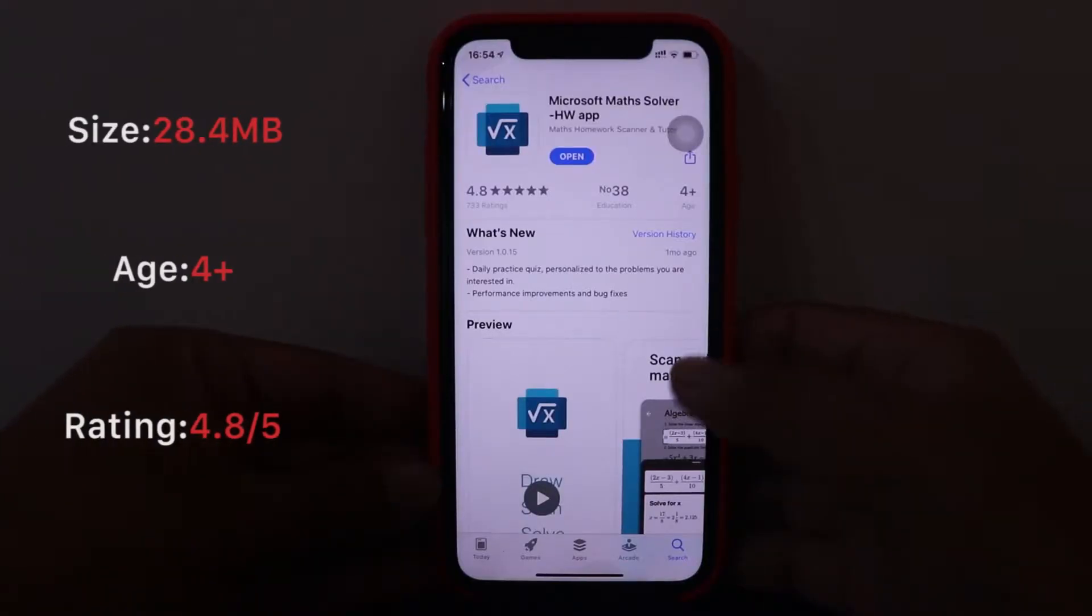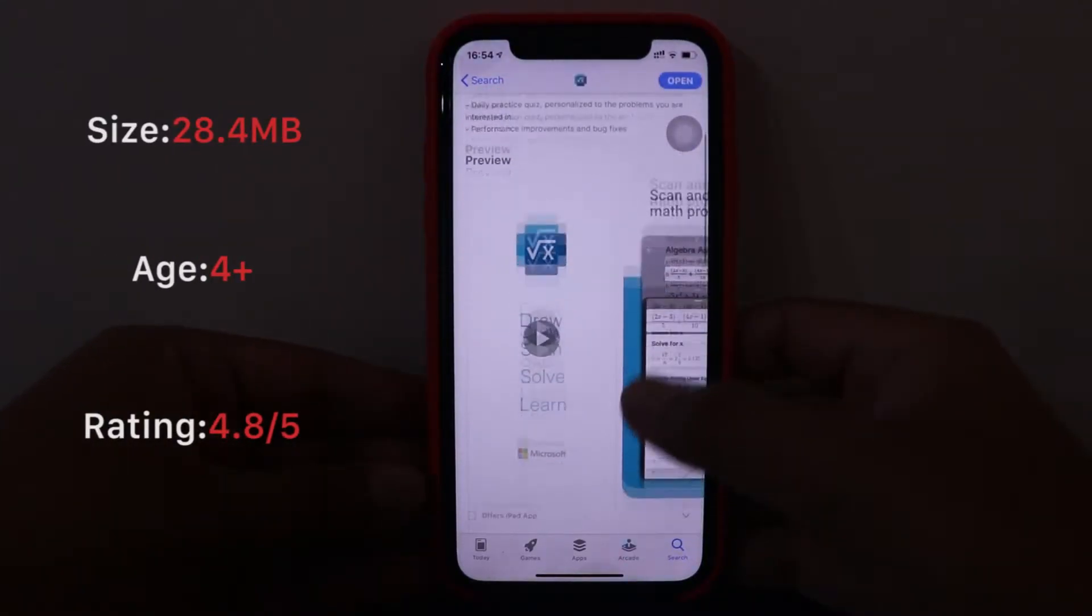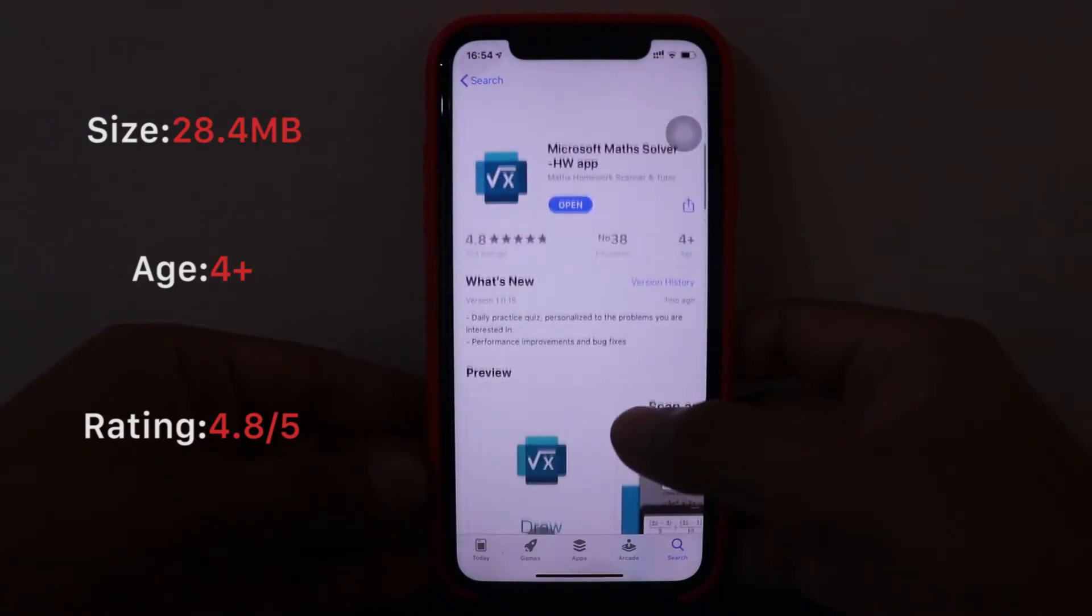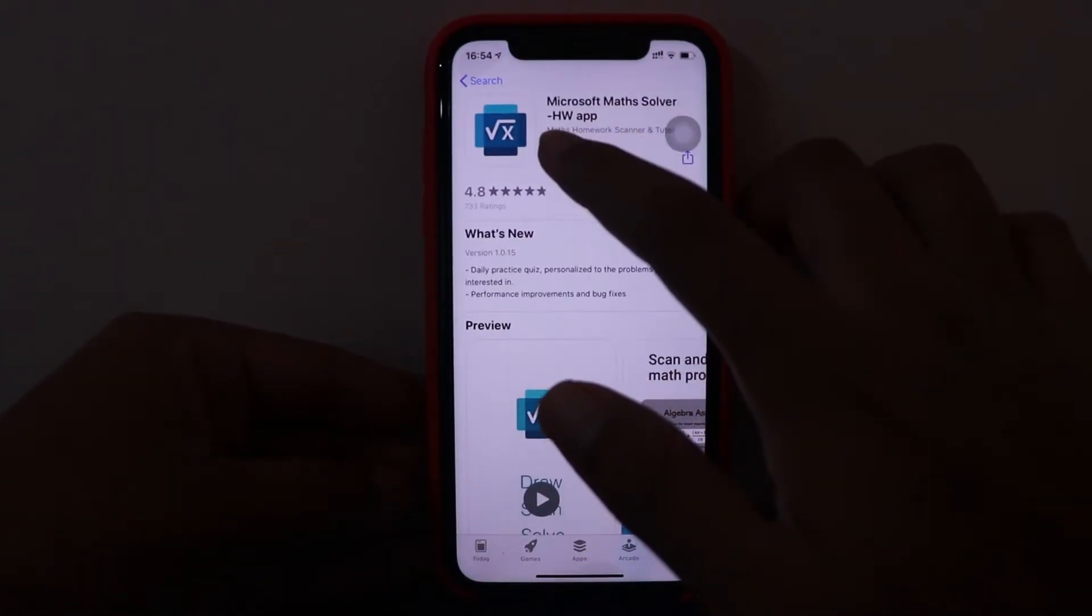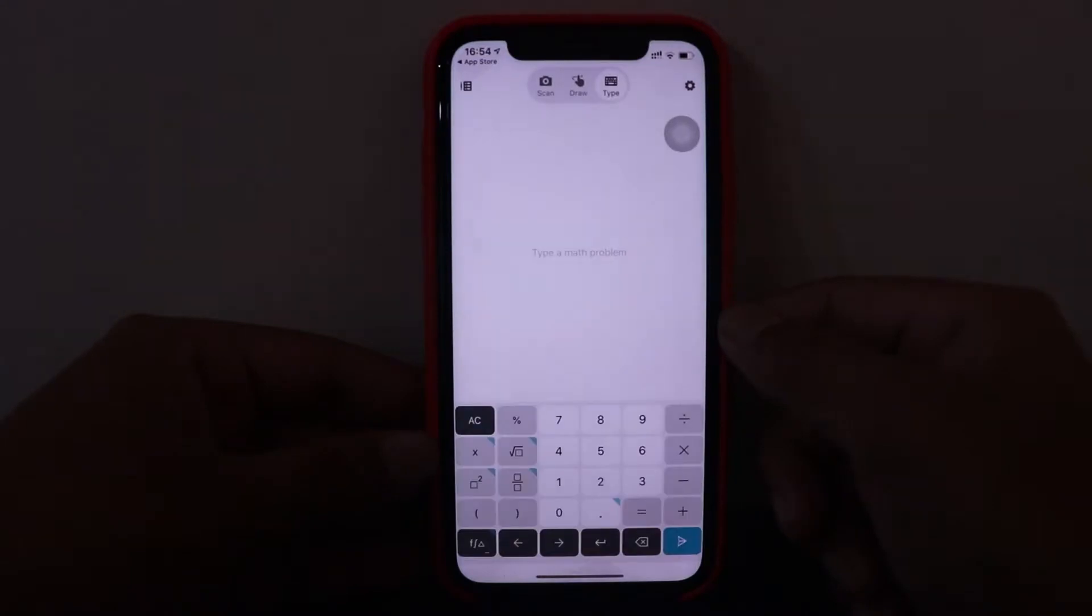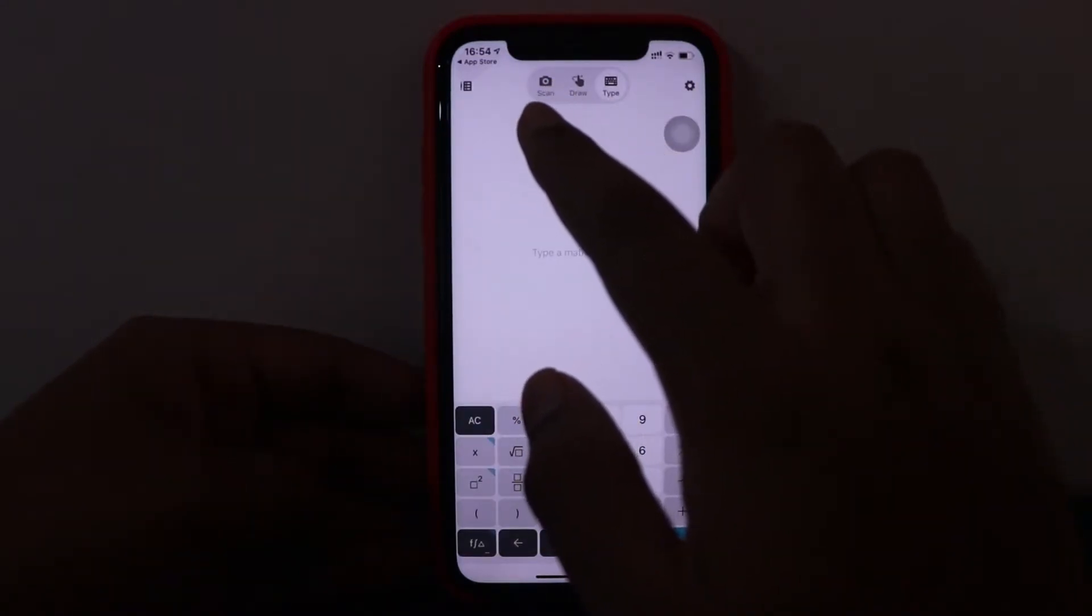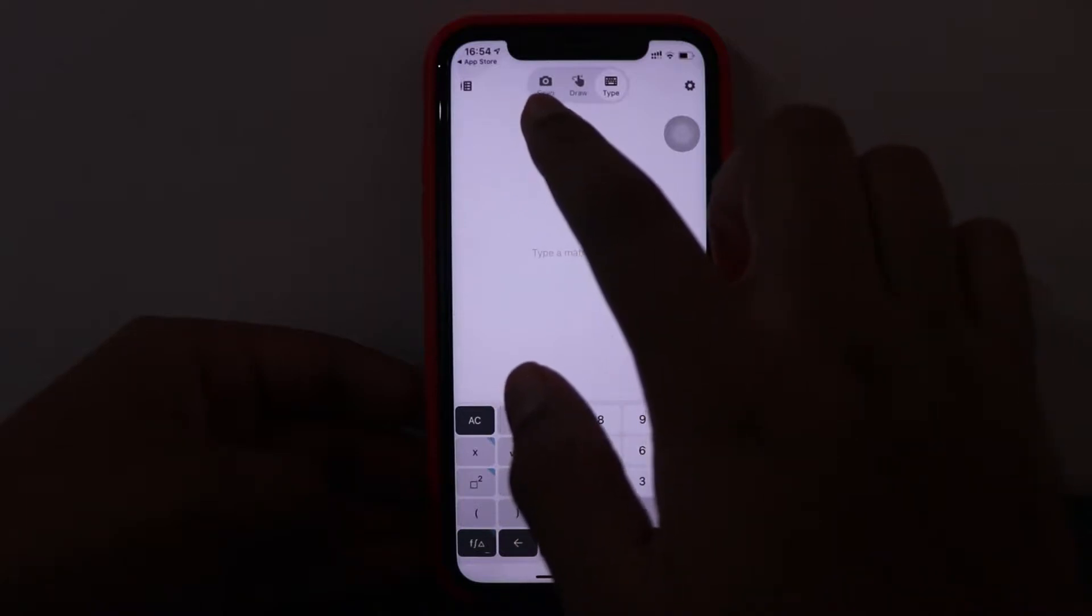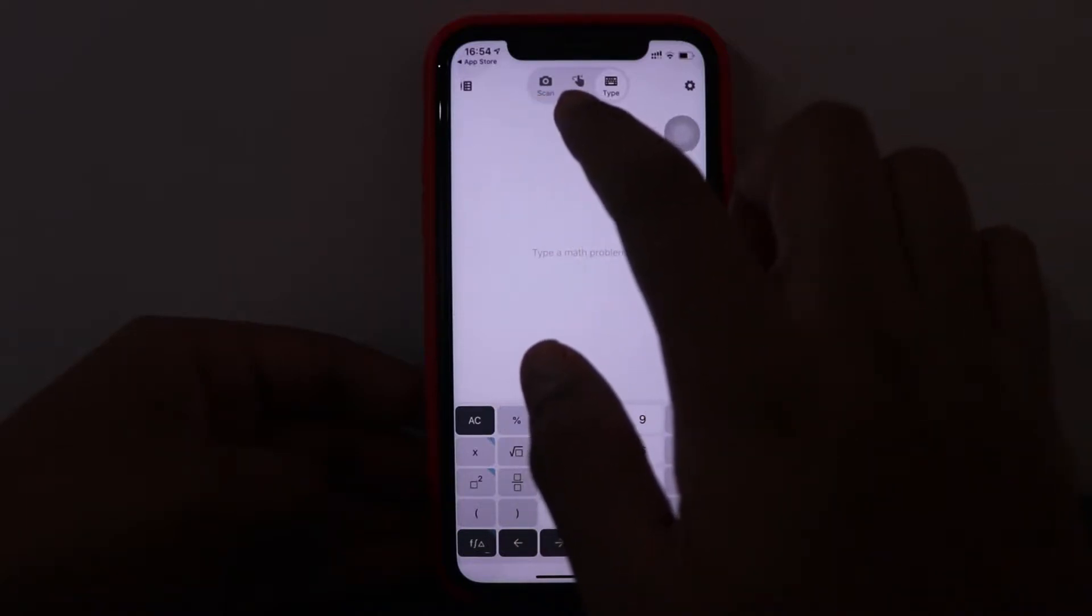Here's the app guys, Microsoft Math Solver HW app. It has 4.8 rating. Let's just open the app. So this is how you get the interface. Basically, as you can see, you have three options here. You can scan or you can click the image, you can draw the equation, and you can type the equation.